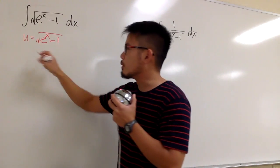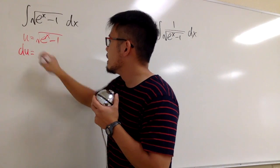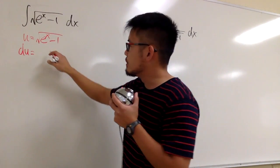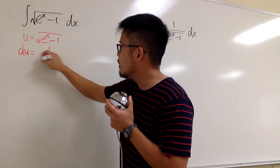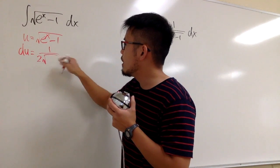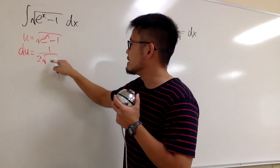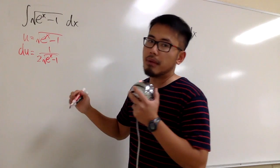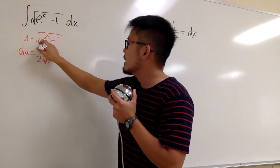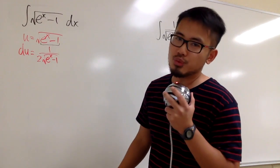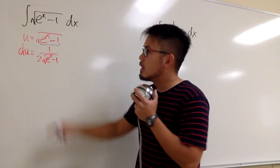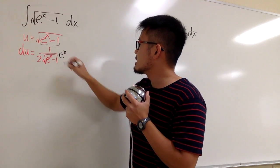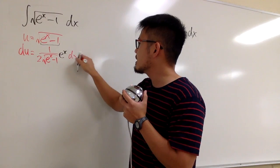Differentiate both sides, we get du. The derivative of the square root of something is just 1 over 2 times the square root of whatever is inside, so we have e to the x minus 1. Don't forget to multiply by the derivative of the inside. The derivative of e to the x minus 1 is just e to the x. And then we still have dx.